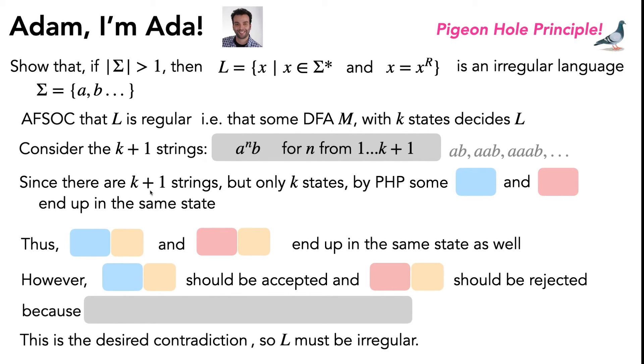So we know that two of them end up in the same state. We don't get to pick which two, we just know that two from this set end up in the same state. So it's important you don't write, oh, the string with three a's and a b and the string with eight a's and a b end up in the same state. You just know that they come from the set, you don't know which ones they are.